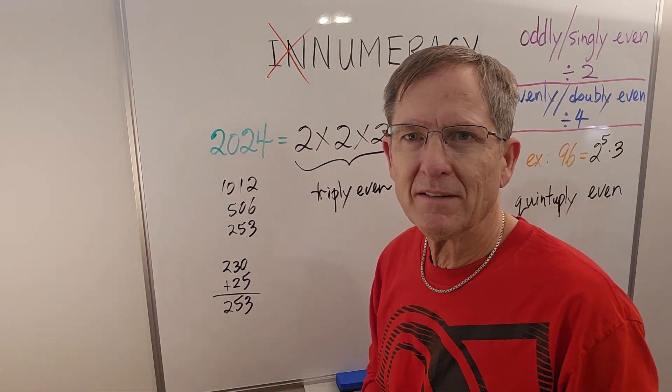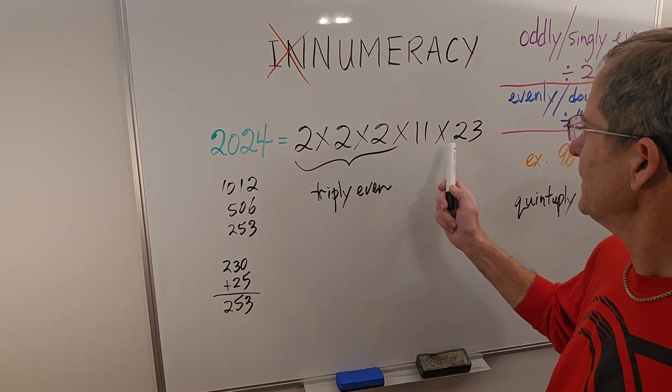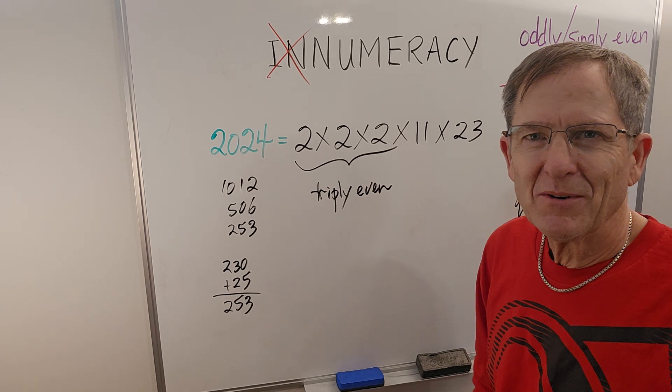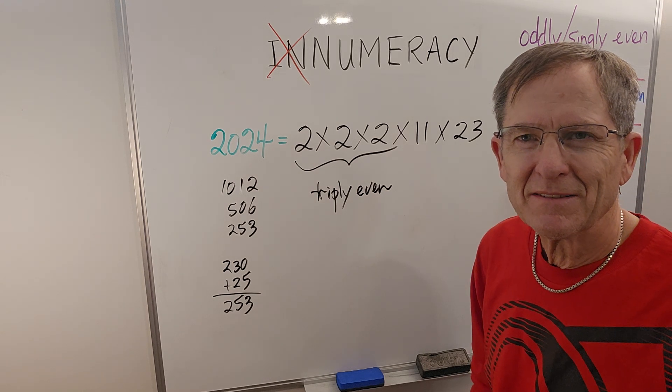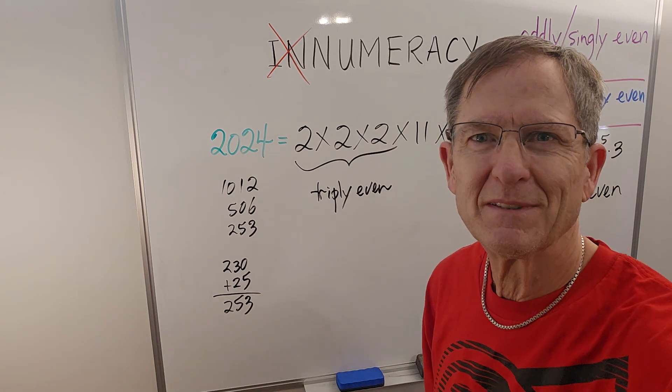So there you have it. 2024 in its factored form: 2 times 2 times 2 times 11 times 23. Hope you enjoyed that. Subscribe, comment, and we'll see you next time. Bye-bye.